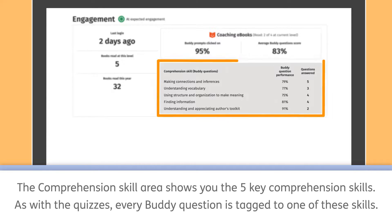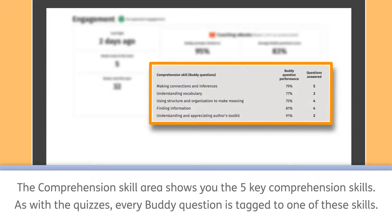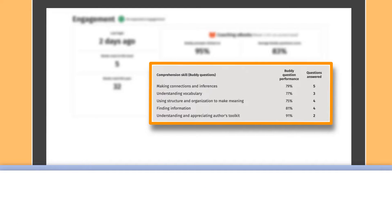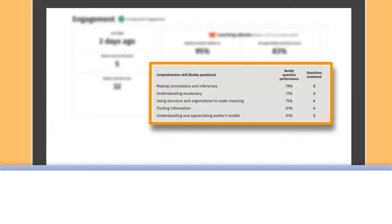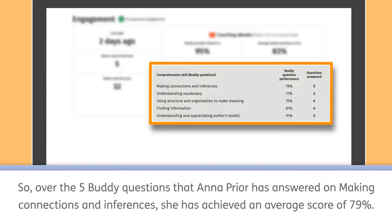The comprehension skill area shows you the five key comprehension skills. As with the quizzes, every Buddy question is tagged to one of these skills. The Buddy question performance column shows the aggregated score for each comprehension skill within the current level. So, over the five Buddy questions that Anna Pryor has answered on making connections and inferences, she has achieved an average score of 79%.